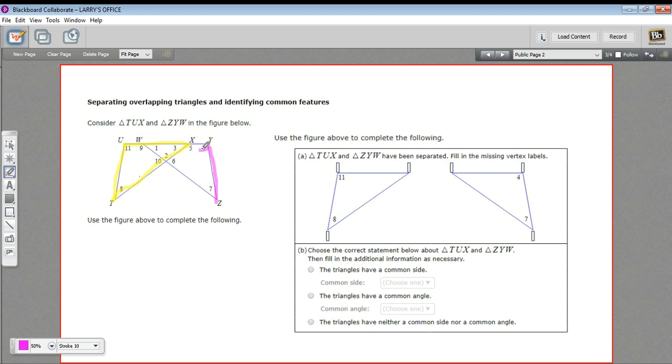When they pull these apart in this diagram, they're asking us to fill in the labels for the vertices. Here's TUX - you see angle 11 here, so you know you're in the right place. The vertex by angle 11 is U, so that goes in here. The vertex by angle 8 is T, and the other vertex for this triangle is X.